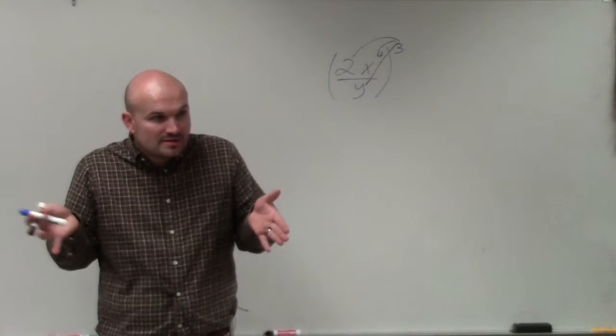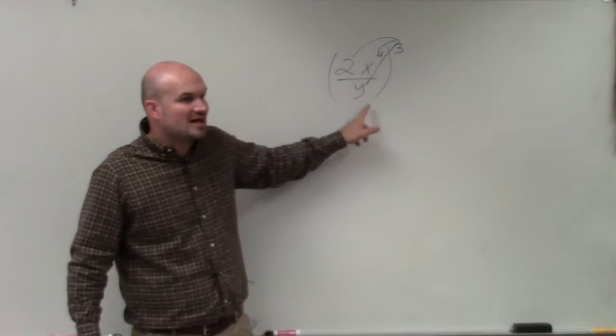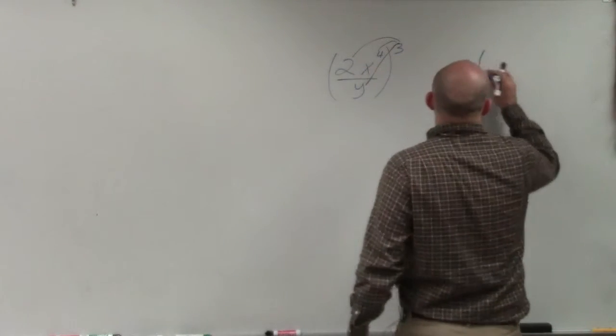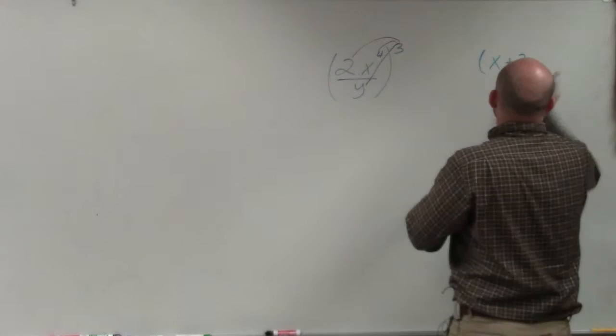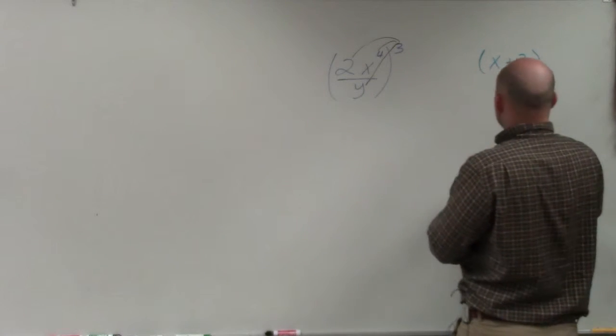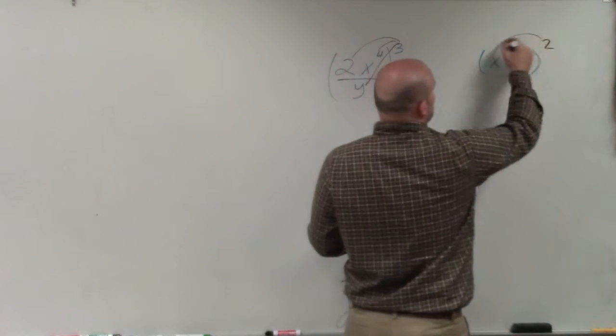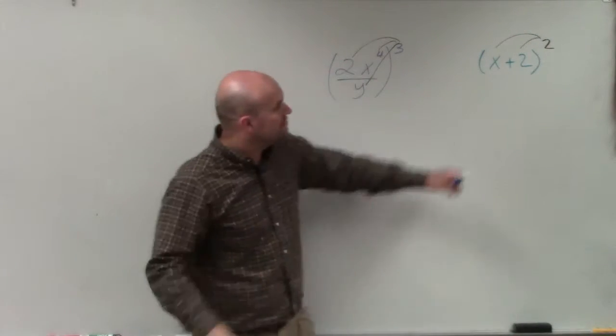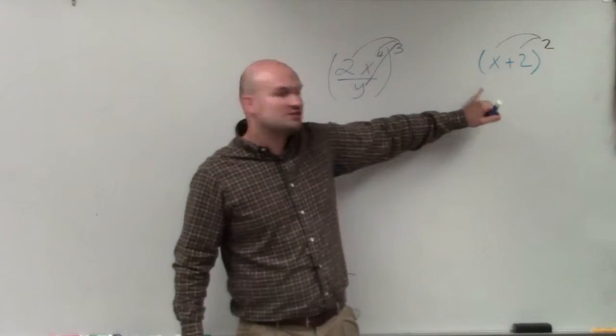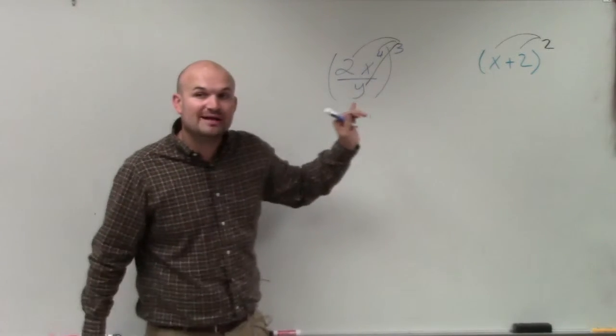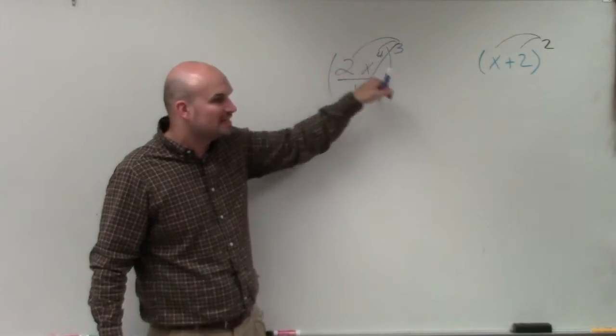Now please note there is no addition or subtraction signs in here, right? Because this is what gets everybody confused. We start talking about binomial squares, which we're going to talk about today, and everybody wants to now again distribute. You can't distribute an exponent across an expression separated by addition or subtraction. You can do it when it's separated by multiplication and division.